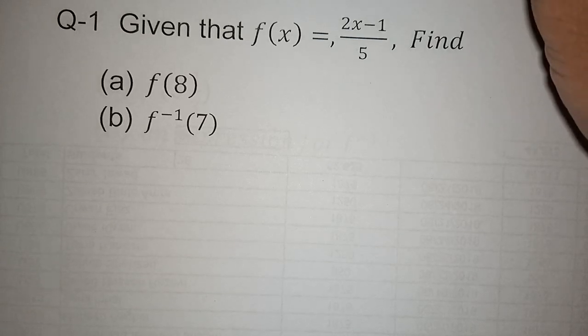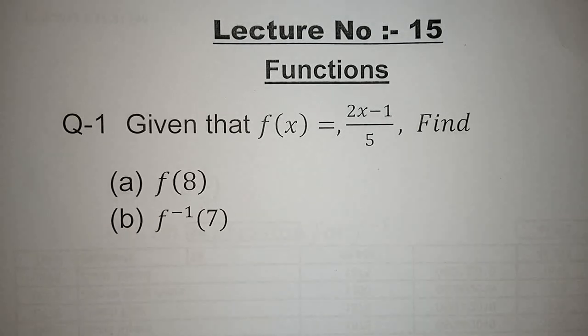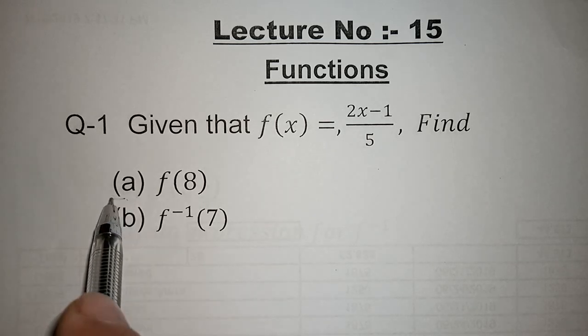Lecture number 15, Functions. This is the 14 lectures upload complete. Given that f(x) is equal to 2x minus 1 upon 5, find f(8) and part b.